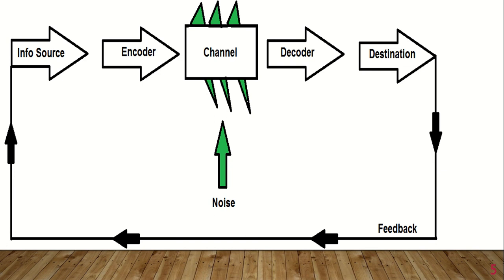And then we have the receiver, who will receive the message, and thus the decoding, which is the understanding or interpreting of the message. Then lastly, we have the feedback, which wasn't part of this model originally, but was later added by other theorists to make this model a cycle and not a one-way model. This model has become a circular model wherein the receiver can speak in response to let the sender know what they heard or understood.